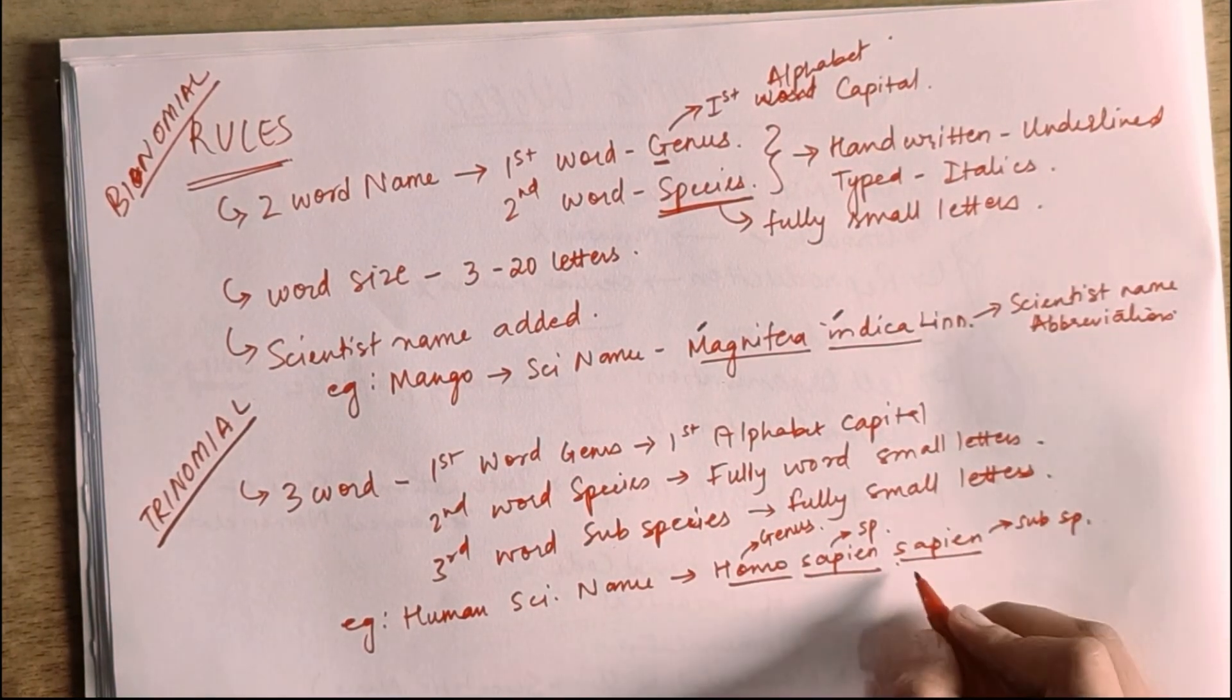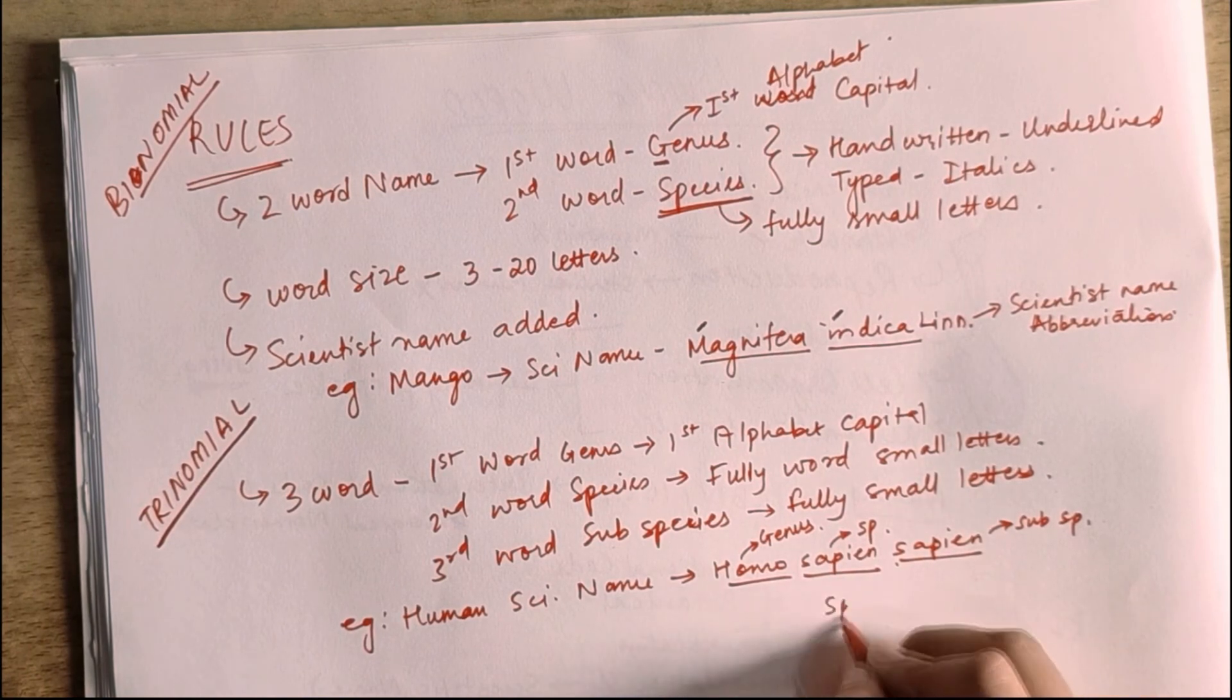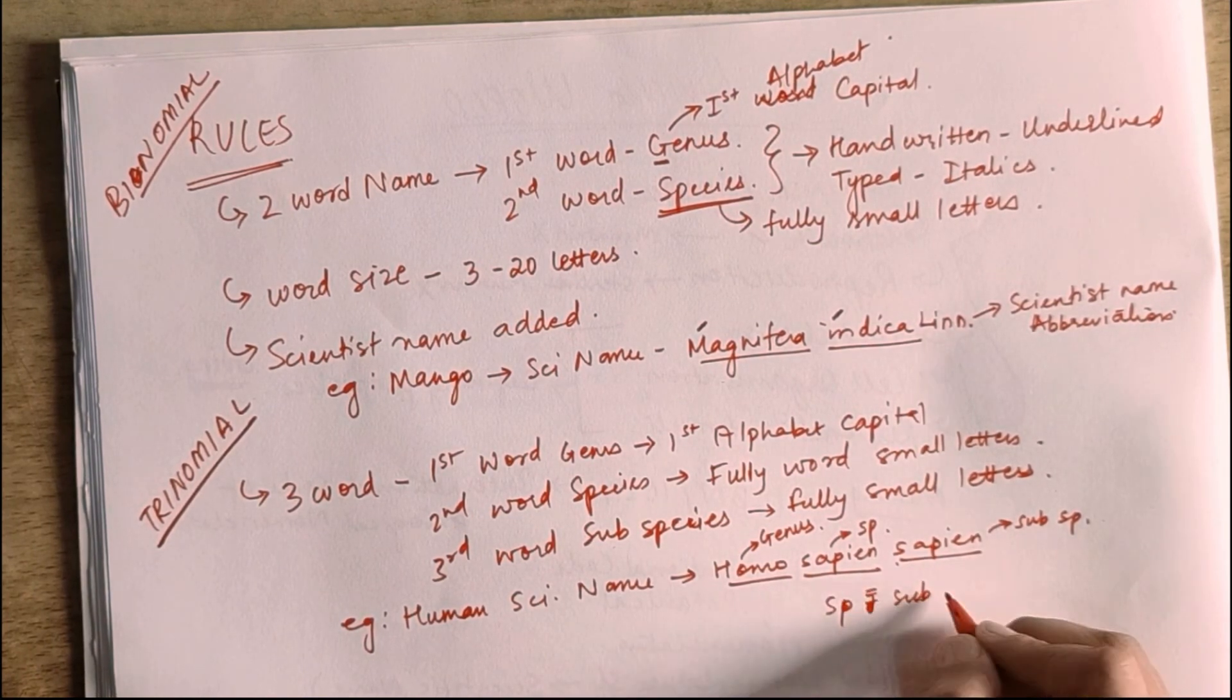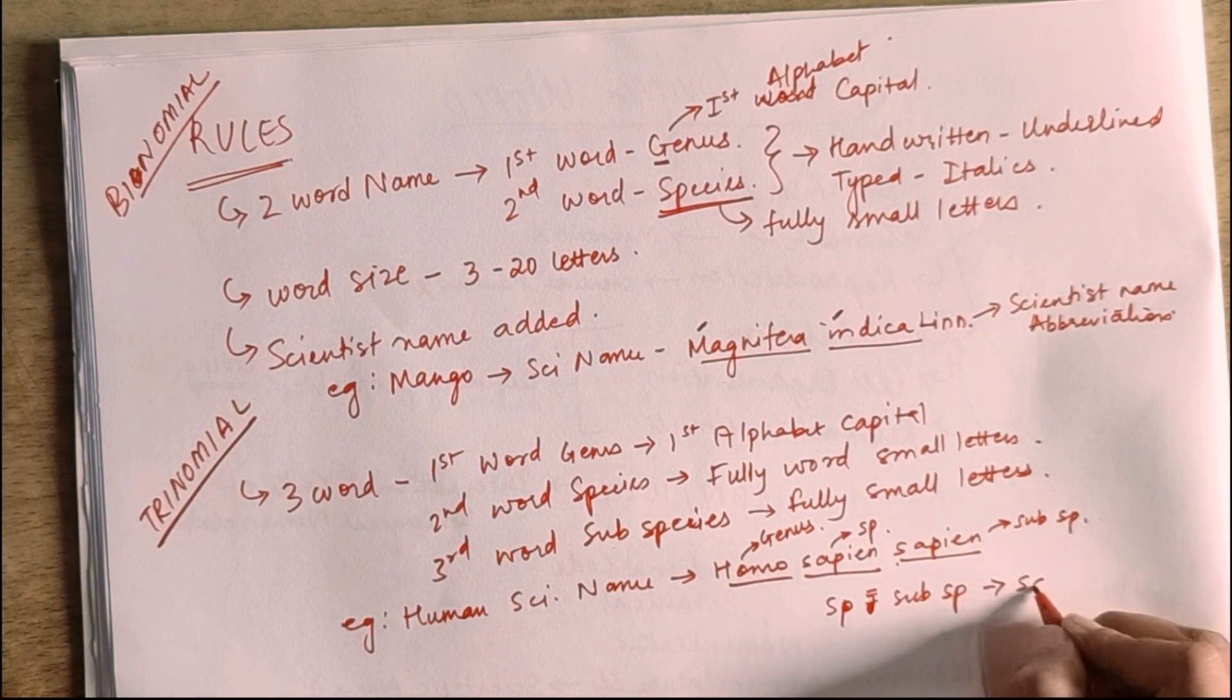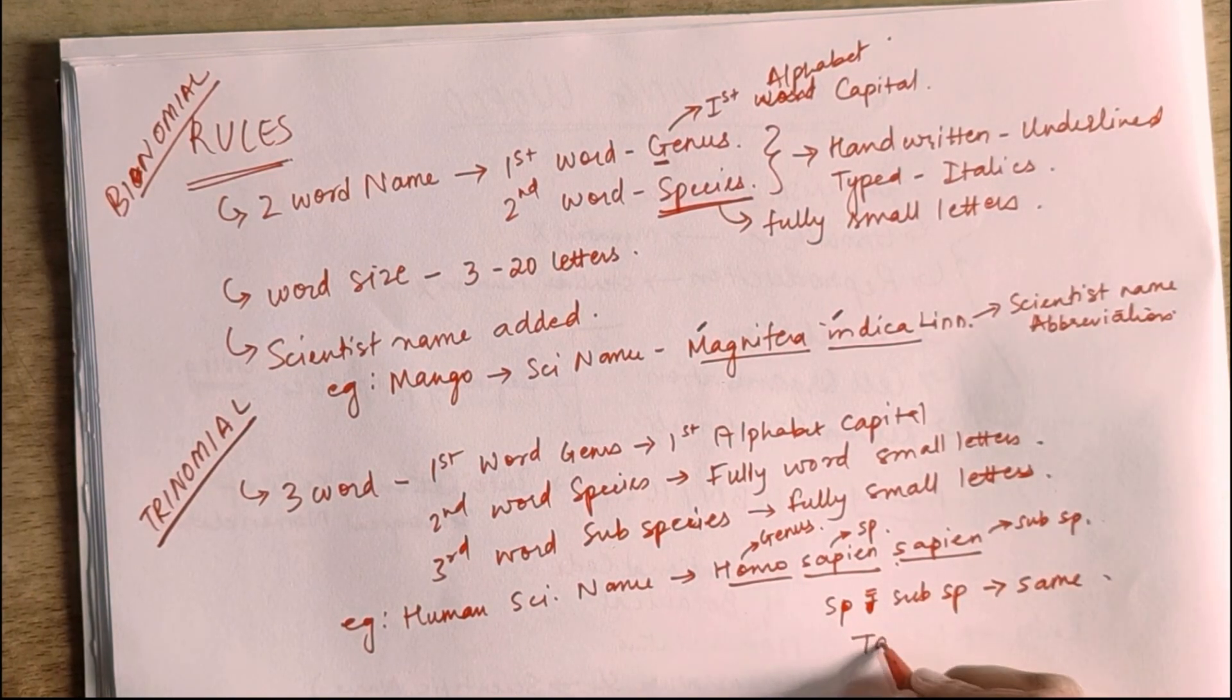Now, in the naming system, if the species and the subspecies name are the same, then we call it tautonyms.